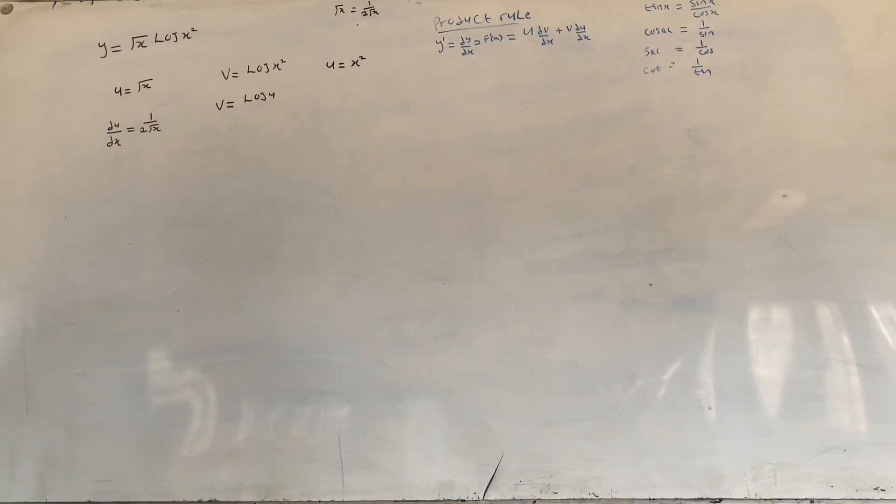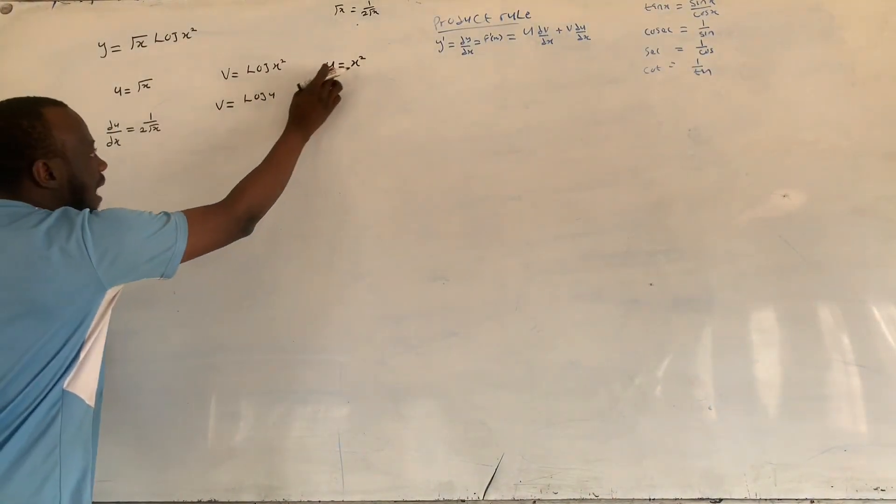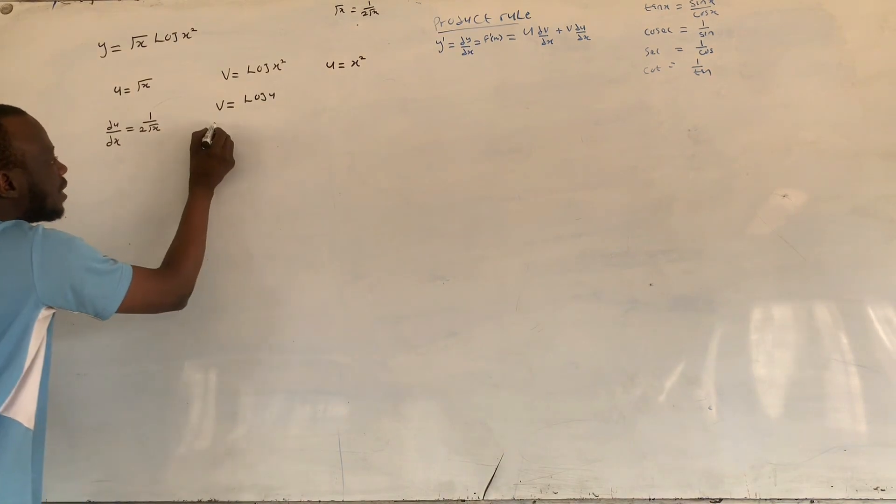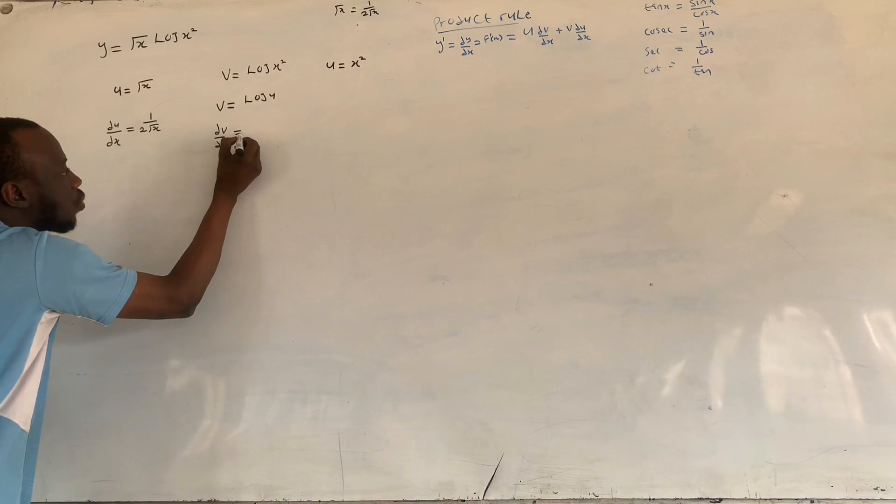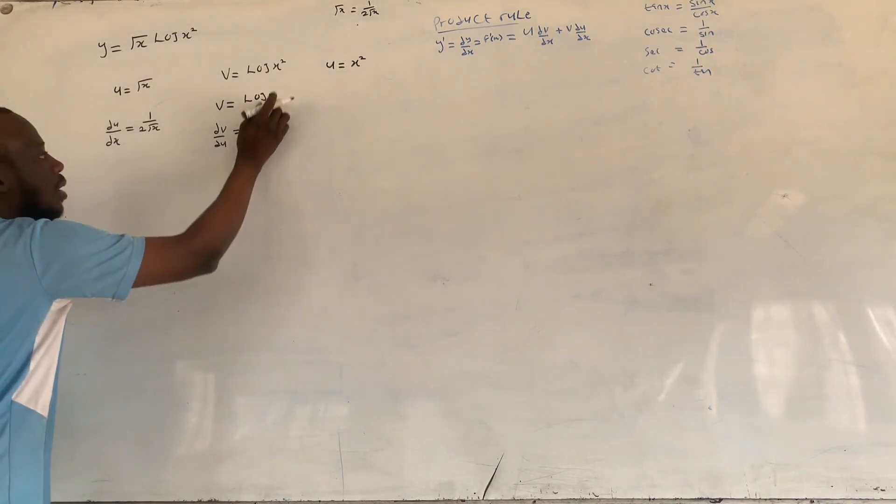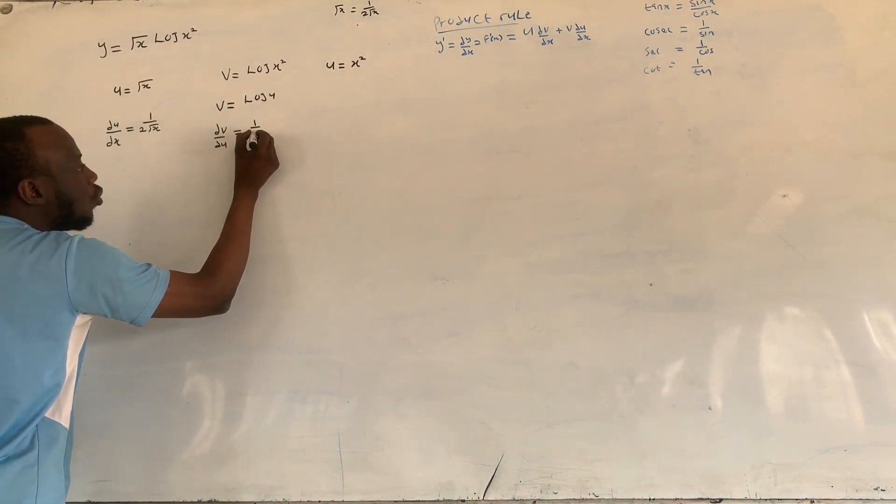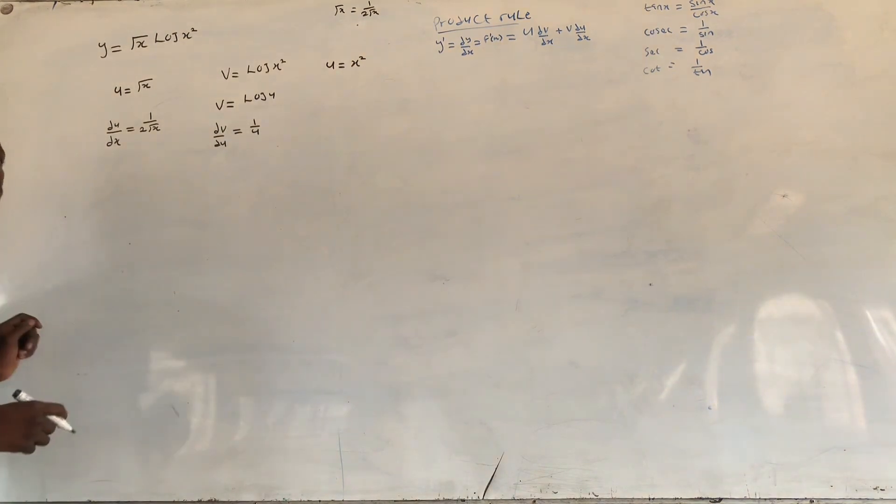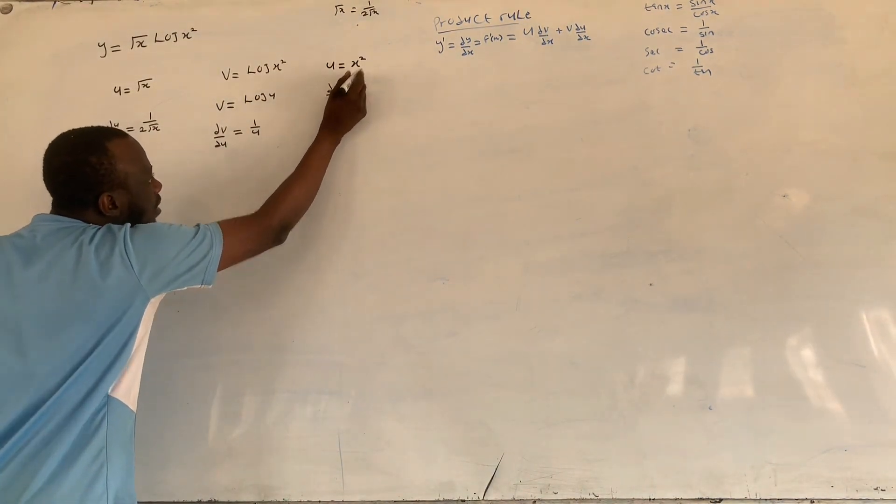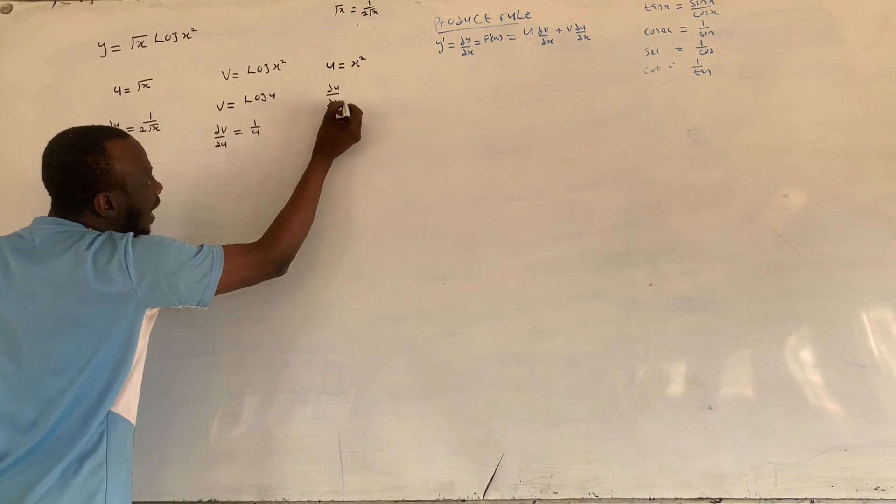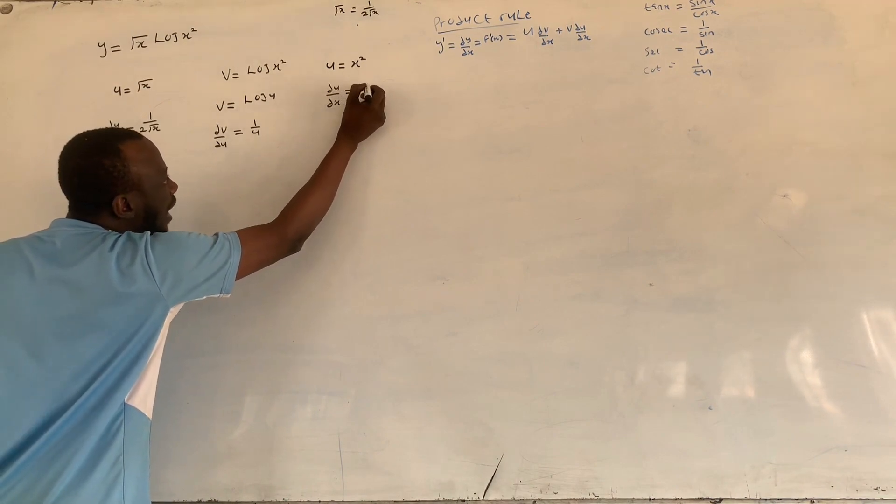So then it says we differentiate both sides. Here we go. dv over du is equals to what? Here is one over u. You remember the derivative of log x is one over x. Now then here we have du over dx equals to what? 2x.